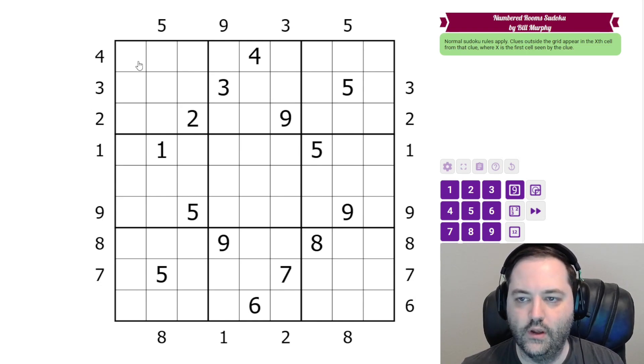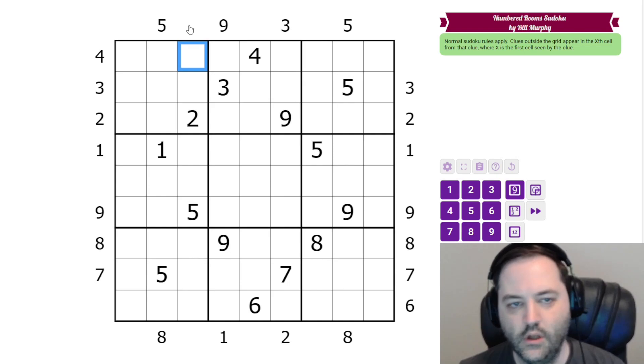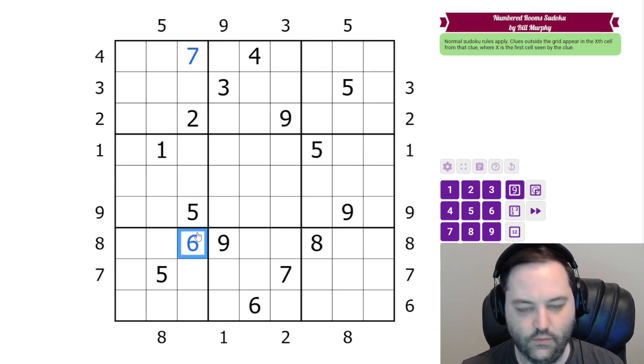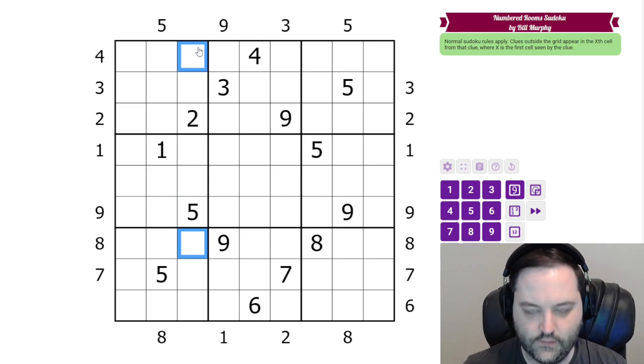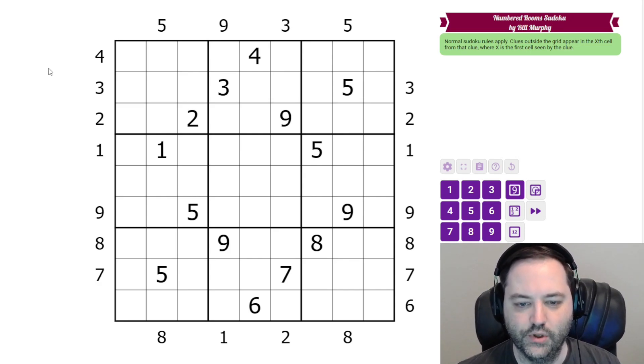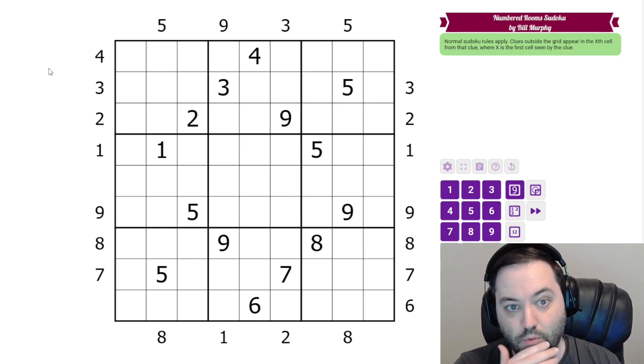We have normal Sudoku rules as usual, and the clues outside the grid tell us the digit that appears in cell number X, where X is the first cell from that direction. So if we had a 6 right here, and this cell had a 7 in it, then the clue is telling us that 6 appears in the seventh cell. So 1, 2, 3, 4, 5, 6, 7, this would be a 6. That's how those work, and Bill has been very nice to us here. I believe almost all of the clues are immediately resolvable, so let's do that.